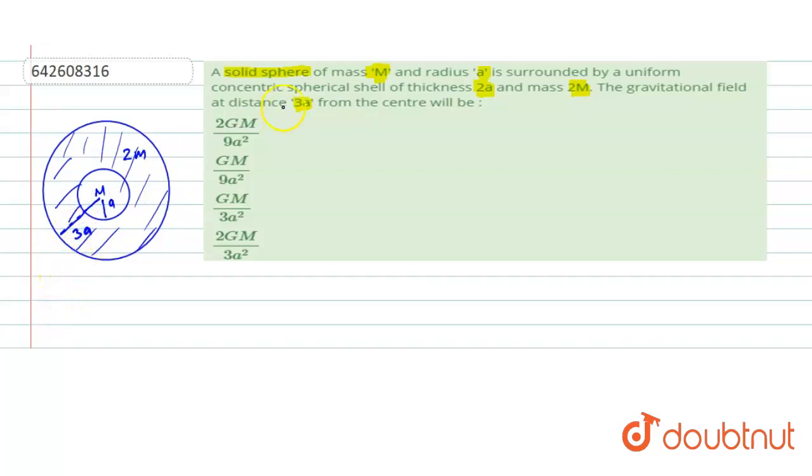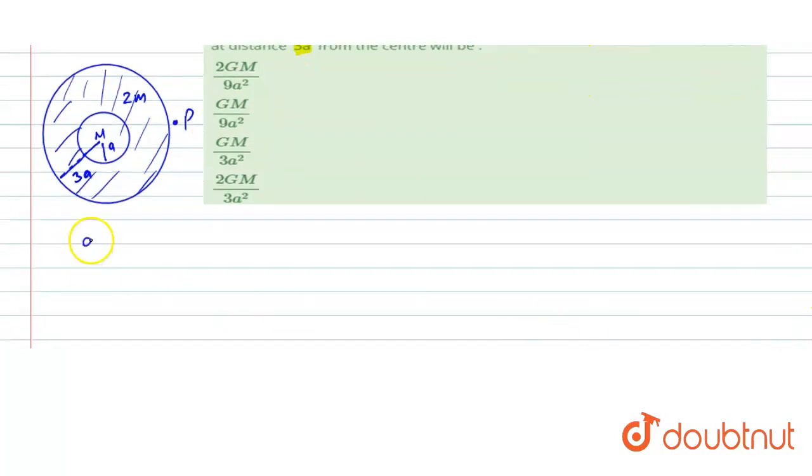Let's say there is a point P. We have to find the gravitational field at the point P. So field at point P will be